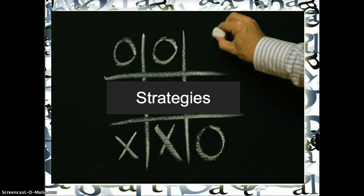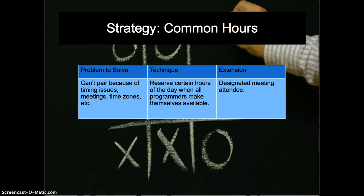Now let's talk about some strategies for winning at pair programming. The first strategy is to respect common hours. Sometimes team members are not in the same time zone or on the same schedule, so the technique is to reserve certain hours of the day when all programmers make themselves available to pair. Some teams will choose 10 to 11 in the morning, or 9 to 11 in the morning, and then 1:30 to 3:30 in the afternoon. You'd be surprised what you can do in just a few hours when pair programming.